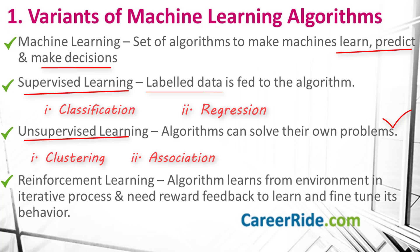When only some of the data is labeled while the major portion is unlabeled, the algorithms used are semi-supervised. The third variant is reinforcement learning. In reinforcement learning, the algorithm continuously learns from the environment in an iterative process until it has explored the complete range of possibilities. The agent or algorithm just needs reward feedback — referred to as the reinforcement signal — to learn and fine-tune its behavior.